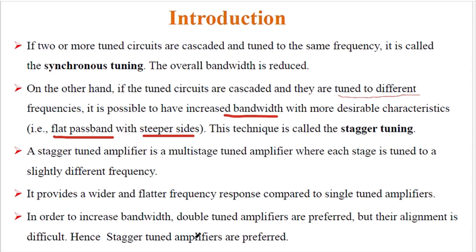To get more bandwidth, we have double tuned amplifiers. The double tuned amplifier consists of two tuned circuits in the same amplifier circuit, and the two tuned circuits are tuned to the same frequency, giving higher bandwidth. But the drawback of the double tuned amplifier is that alignment is difficult — maintaining two tuned circuits at the output and tuning them to the same frequency is also difficult. Hence, to have more bandwidth, the stagger tuned amplifier is preferred.